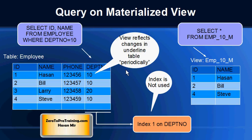In case of a regular view, whenever you make any changes to the base table it would be reflected immediately in the view. If you delete a record from the base table it will be removed from the view immediately. If you update a value in the base table it will be reflected immediately as updated in the view. But in case of a materialized view there is a lag, and the lag is dependent on the refresh rate you have selected.